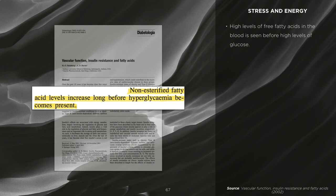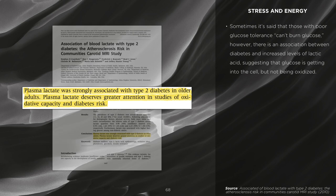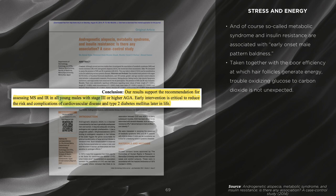While many problems are blamed on elevated levels of glucose, it was found that high levels of free fatty acids in the blood are seen before high levels of glucose. Additionally, sometimes it's said that those with poor glucose tolerance can't burn glucose; however, there is an association between diabetes and increased levels of lactic acid, suggesting that glucose is getting into the cell but is not being oxidized or used with oxygen. So-called metabolic syndrome and insulin resistance are associated with early onset male pattern baldness. Taken together with the poor efficiency at which hair follicles generate energy, trouble oxidizing glucose to carbon dioxide is not unexpected.